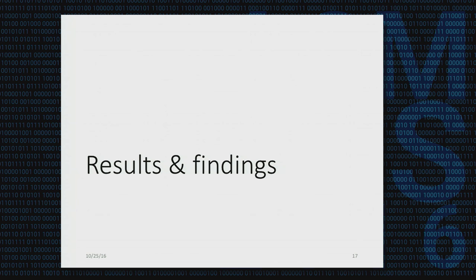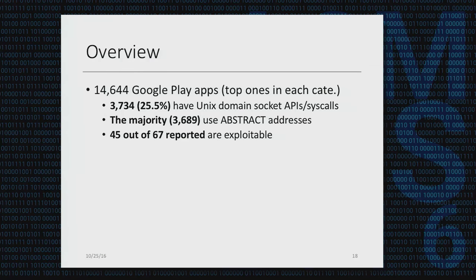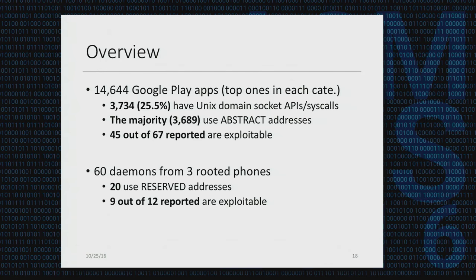We downloaded nearly 15,000 Google Play apps. It turns out the majority of apps using Unix domain sockets are actually using abstract socket addresses. We identified 67 reported vulnerable apps, but 45 of them are truly exploitable. For daemons, we analyzed 60 daemons from three rooted phones — we could only use rooted phones because our analysis on daemons relies on root access. We found 20 of them use reserved addresses, and 9 out of 12 reported by UDS Inspector are truly exploitable.